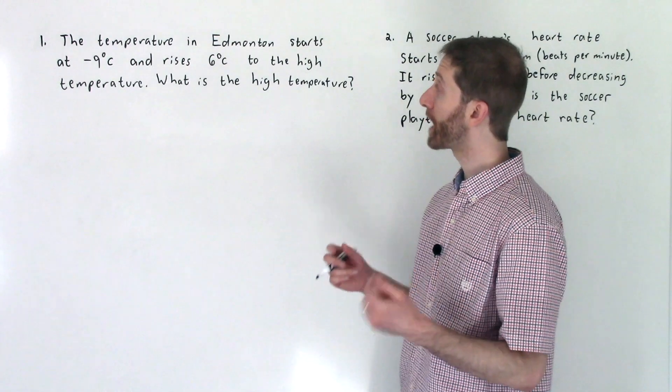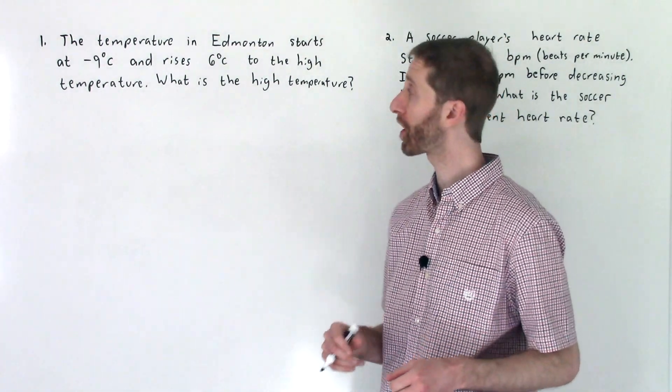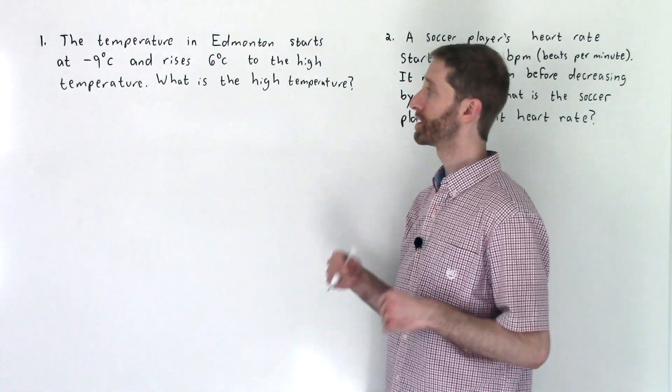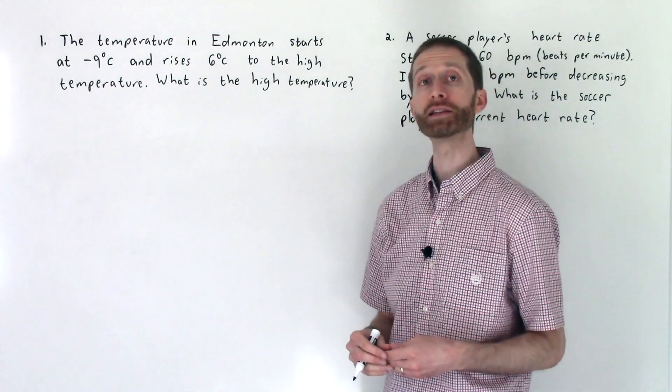The first problem says the temperature in Edmonton starts at negative nine degrees Celsius and rises six degrees Celsius to the high temperature. What is the high temperature?